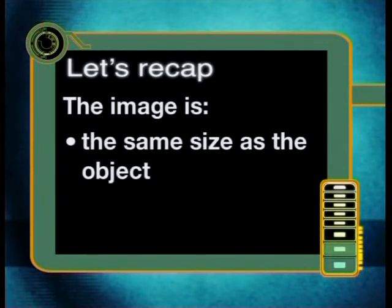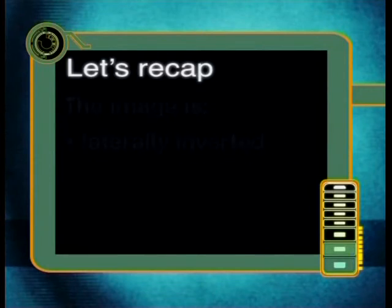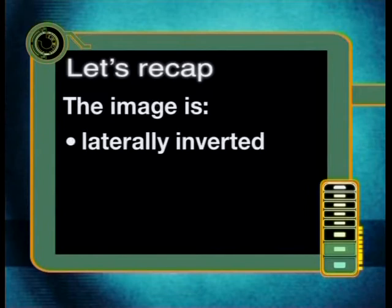The image is the same size as the object. The image is the same distance behind the mirror as the object is in front of the mirror. The image is laterally inverted. The image is virtual.